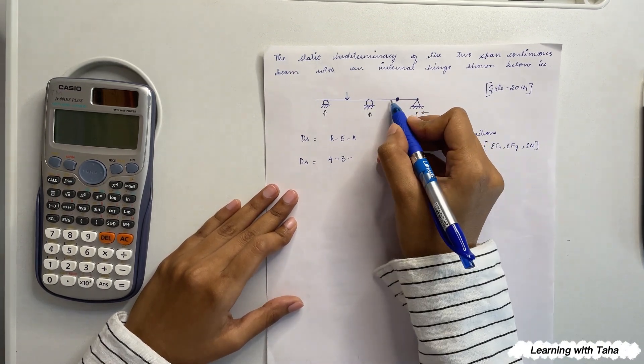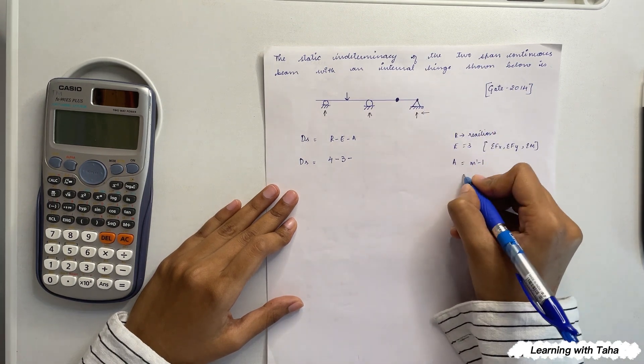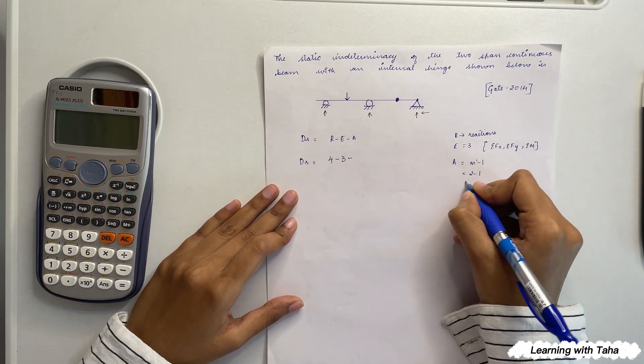dash minus one. That is, two members are connecting a single hinge, so two minus one, which is equals to one.